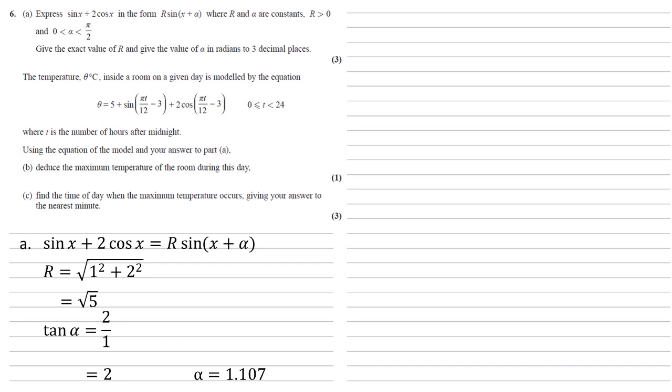We need to use the equation of the model and our answer to part a to deduce the maximum temperature of the room during this day. The important thing to notice is it asks us to use our answer to part a, where we worked out that sin x plus 2 cos x equals root 5 sin(x plus 1.107). Looking at the equation we've been given, we can see it's got the same format. After the 5, we've got sin of a value plus 2 cos of the same value.